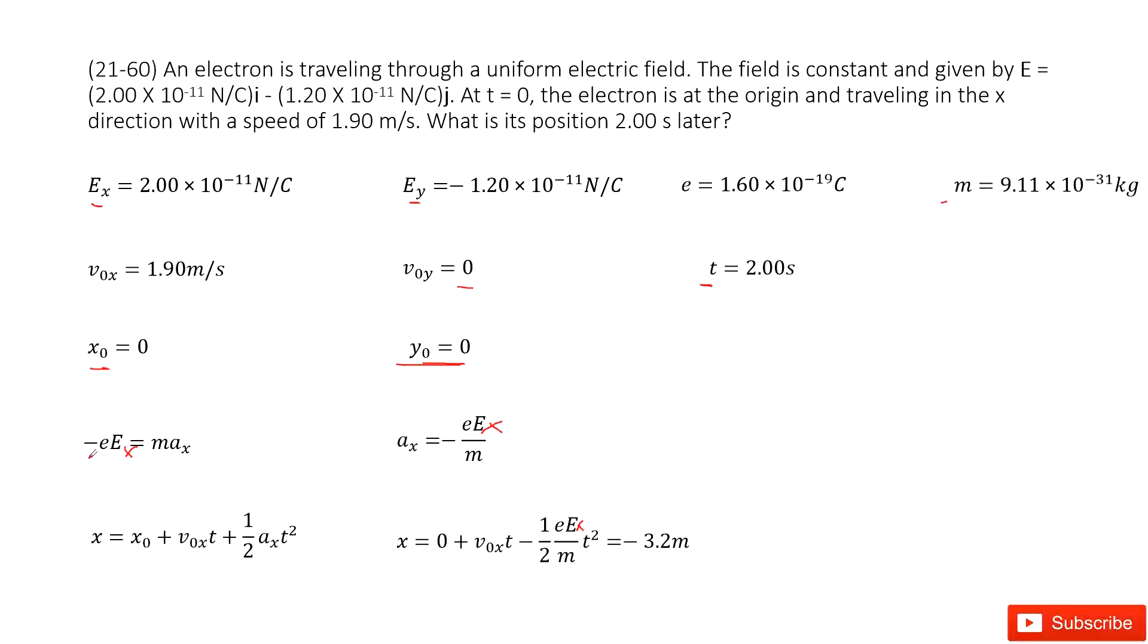So we use the charge. The electron carries one negative fundamental charge times the electric field Ex equals mass times acceleration ax. Therefore, we can write the equation for ax in this form. So this is Ex.